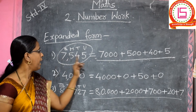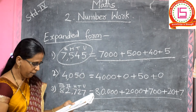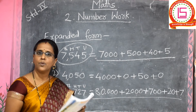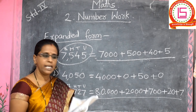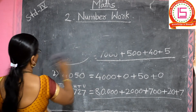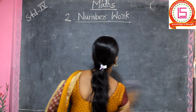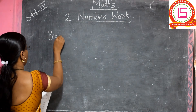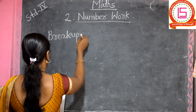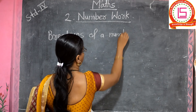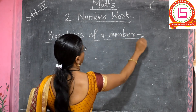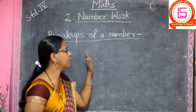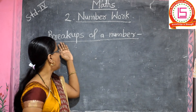You write only the place value of each digit and make the expanded form. It's very simple — start from the highest place and end at the unit place. On page numbers 11 and 12 there is an exercise for you. You solve this exercise in your notebooks. Our next point is break ups of a number.